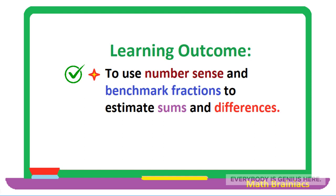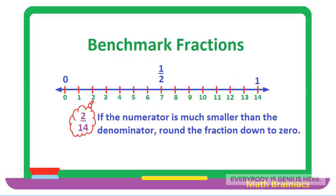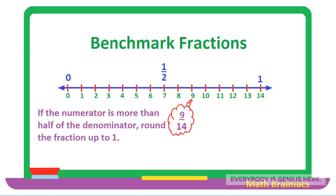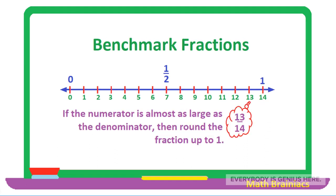We have met our goal for today's lesson — we have learned how to use number sense and benchmark fractions to estimate sums and differences. To wrap it up: if the numerator is much smaller than the denominator, round the fraction down to zero; if the numerator is less than half of the denominator, also round down to zero; if the numerator is more than half of the denominator, round up to 1; and if the numerator is almost as large as the denominator, round up to 1 as well.